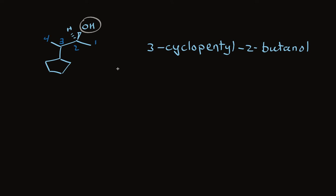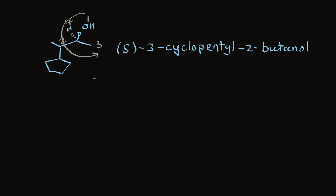There's chirality in the molecule, which we need to designate as R or S. The highest priority is oxygen and the lowest priority is hydrogen. Of the two carbon substituents, the more highly substituted one is priority 2 and the other is priority 3. Going from 1 to 2 to 3, we find ourselves going counterclockwise — that's the S configuration. So the full name is S-3-cyclopentyl-2-butanol.